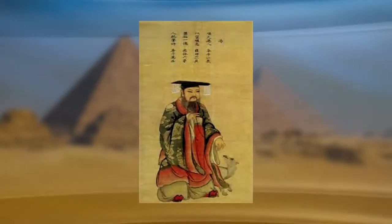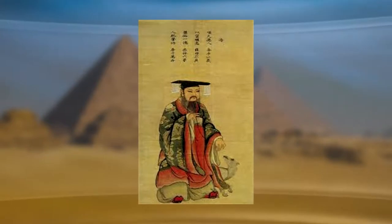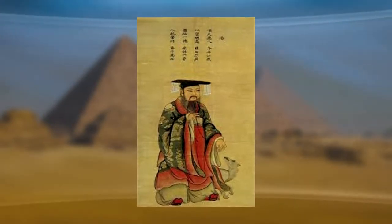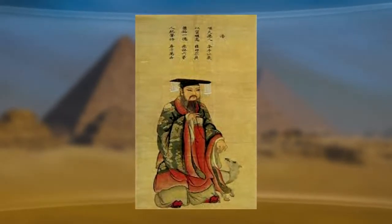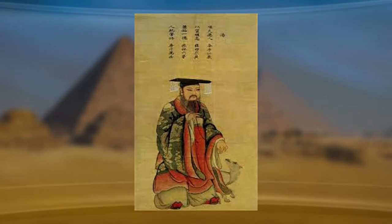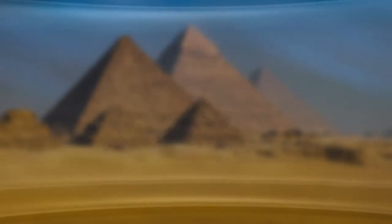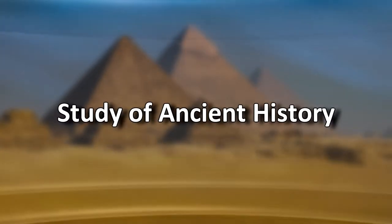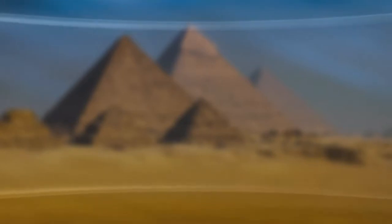Ancient history of China was marked with the Shang dynasty in 1600 BC and ended with the Qin dynasty. Ancient history can be understood by two major sources: source texts and archaeologically.